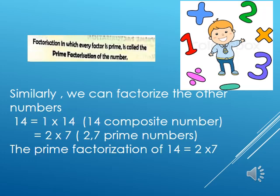See here, 14 we will write as 1 into 14. The same way we will write it as 2 into 7. If you will see 1 into 14, 14 is a composite number. But 2 into 7, both 2 and 7 are prime numbers. So the prime factorization of 14 equals 2 into 7.